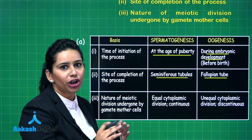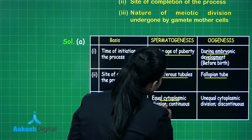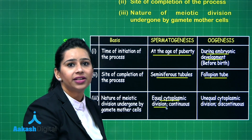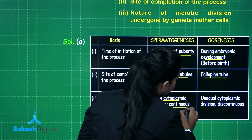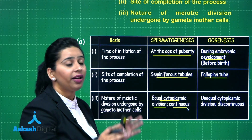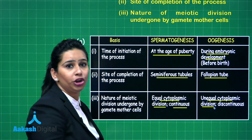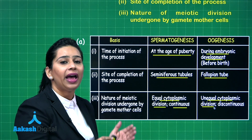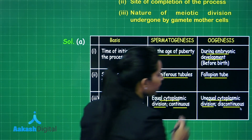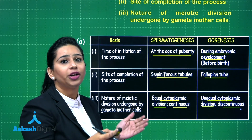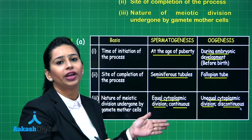The next point is nature of meiotic division undergone by gamete mother cells. In males, it is equal cytoplasmic division, which results in the formation of four equal-sized cells, and it is a continuous division. Unlike females, where there is unequal cytoplasmic division that results in the formation of a large ovum and small polar body, and it is a discontinuous process as the gamete gets arrested at prophase 1 and then in metaphase 2 at different periods of gametogenesis.